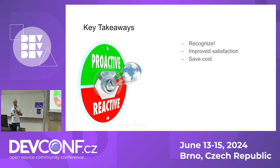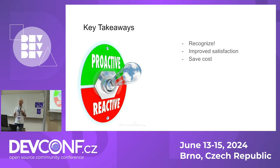Key takeaways: one, proactive maintenance and reactive maintenance is not a switch you can turn on or off — you're always going to have both. Recognize the people who come up with ideas for doing so, and at the end of the day it will improve both user satisfaction and developer satisfaction, and also save cost for your product, your organization, and your customers.